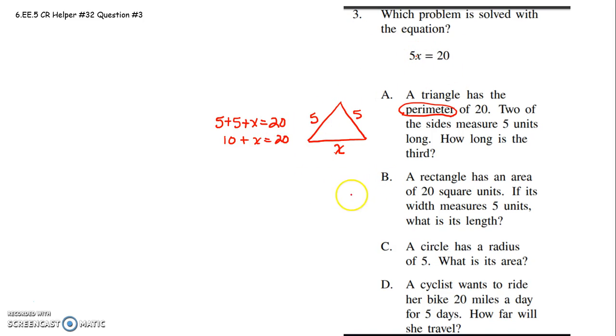Let's skip to letter B. It says a rectangle has an area of 20 square units. That means the area inside is 20 units squared or square units. It says the width is 5 units. What is the length? We don't know the length.